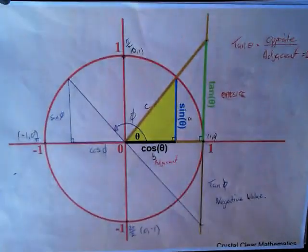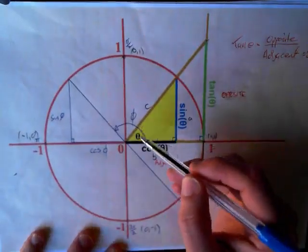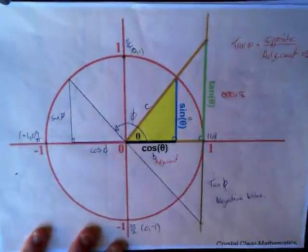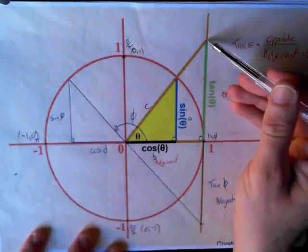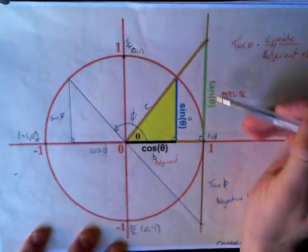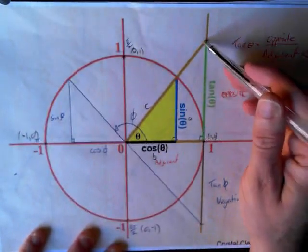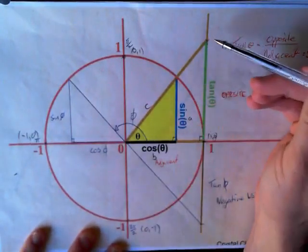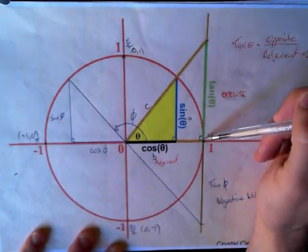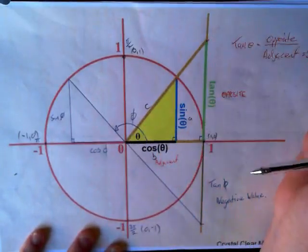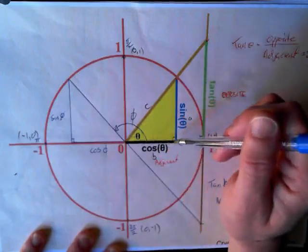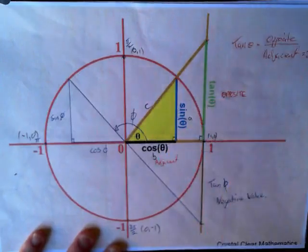We've got this particular unit circle here, with an angle in the first quadrant and also an angle in the second. You can see that the value for tangent is very clearly shown. The one drawn in happens to be a 45-degree angle. The tangent of 45 is actually 1 — it matches the radius. That's just a feature of the geometry: if that's 45°, the sides are 1, 1, and root 2.